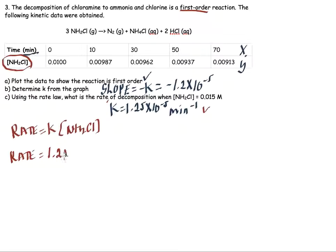So 1.25 times 10 to the minus 5, that's reciprocal minutes, times 0.015 molar. And so the reaction rate, if you punch this into your calculator, is equal to 1.9 times 10 to the minus 7 molarity per minute.